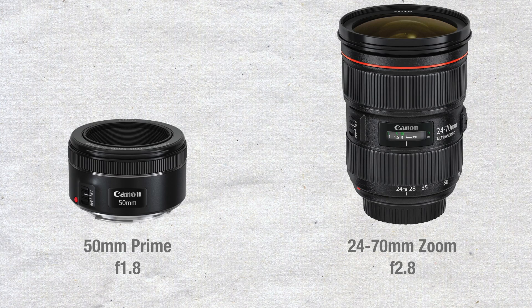It's easy to see how focal length affects your image, and these principles apply with video as well. In terms of lenses, we have zoom lenses and prime lenses. Prime lenses have fixed focal lengths and zoom lenses have variable focal lengths. One advantage of zoom lenses is their versatility — you can always adjust your focal length to suit your scene. With prime lenses you are stuck with a fixed focal length, which can be limiting. However, primes tend to be much smaller and usually have much larger apertures.